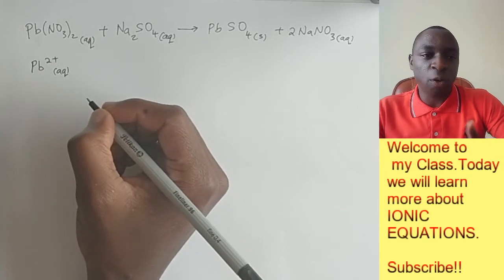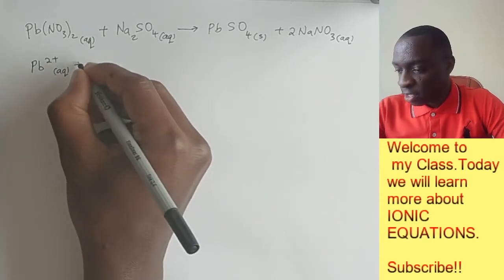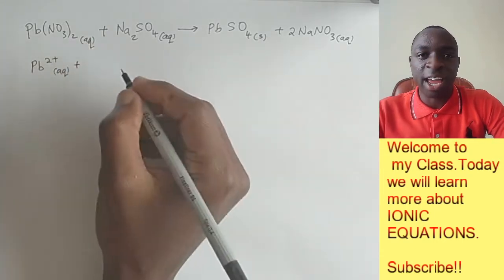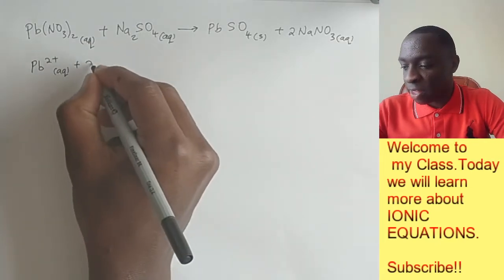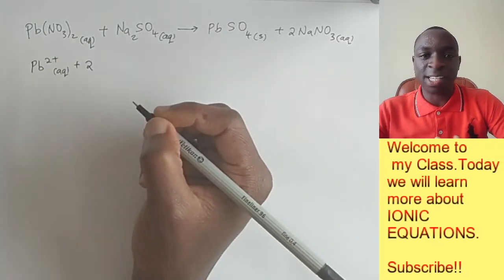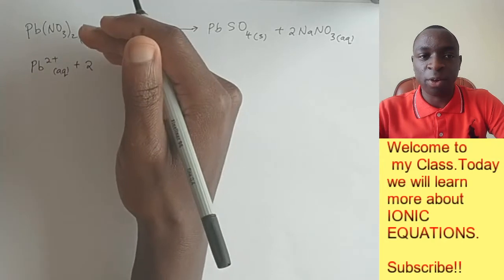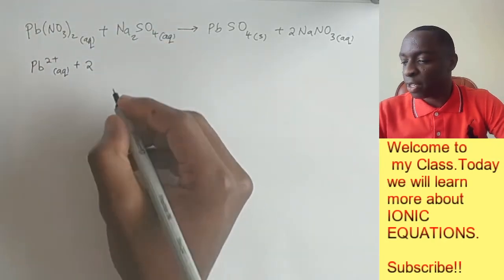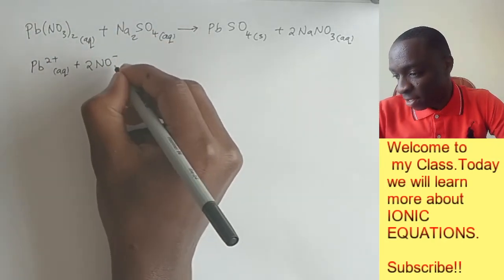The next is to now go for the nitrate. Since we saw that there are two nitrate ions, we write two before the nitrate this time and not as a subscript like it was in the chemical equation up here. So we have nitrate ions like this.